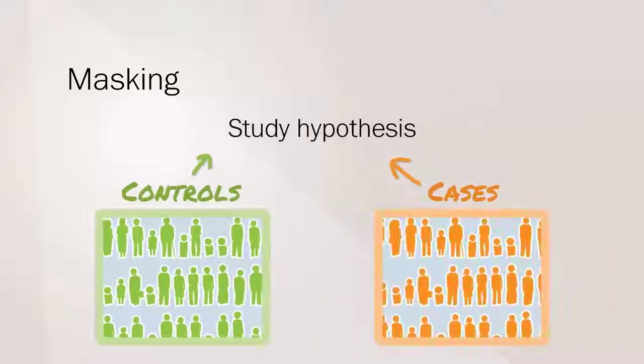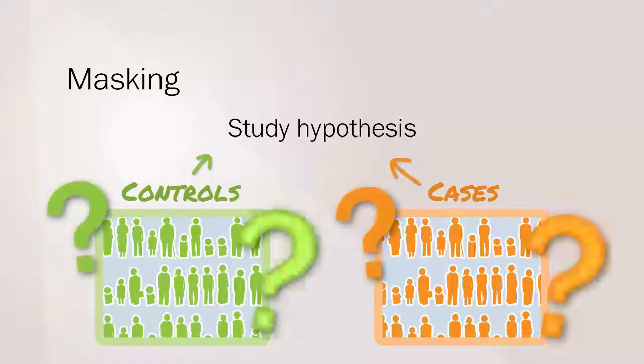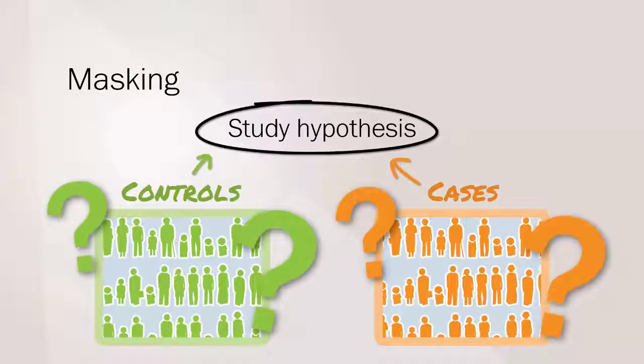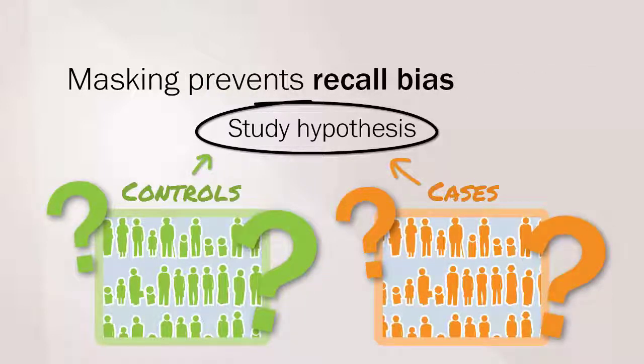Ideally, the cases and controls should not be aware of the study hypothesis. This is to prevent cases being influenced in how they remember past events. This is called recall bias.